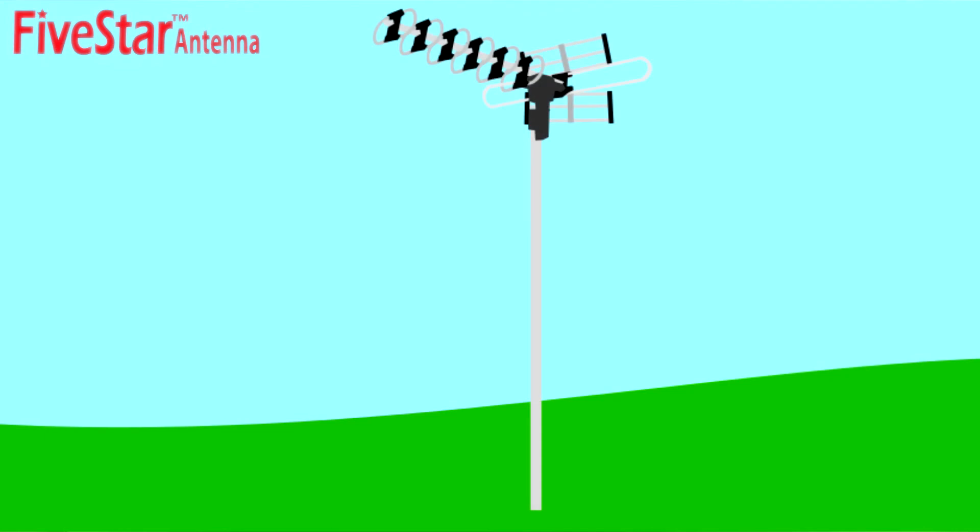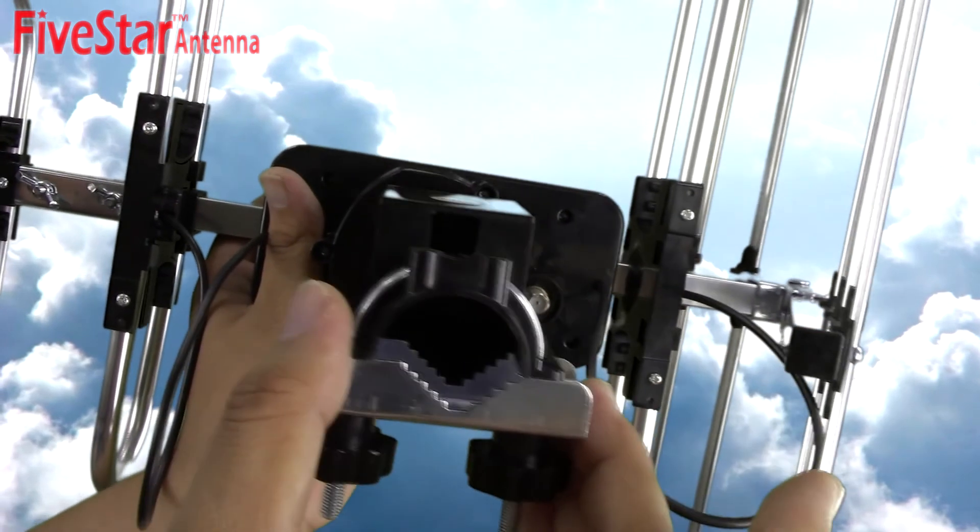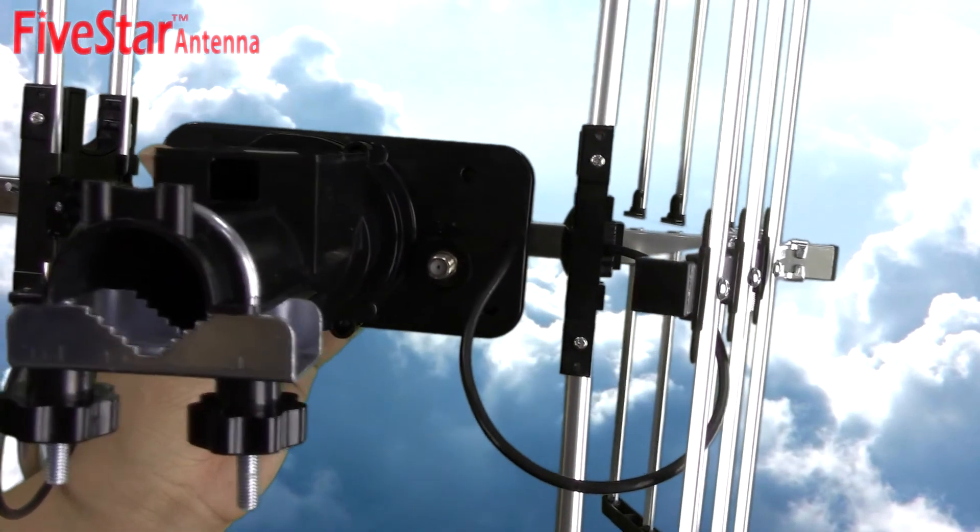For the best results, mount the antenna outside at the top of a pole. The antenna attaches easily to poles from this brace at the bottom. Attach the coaxial cable here at the antenna base.